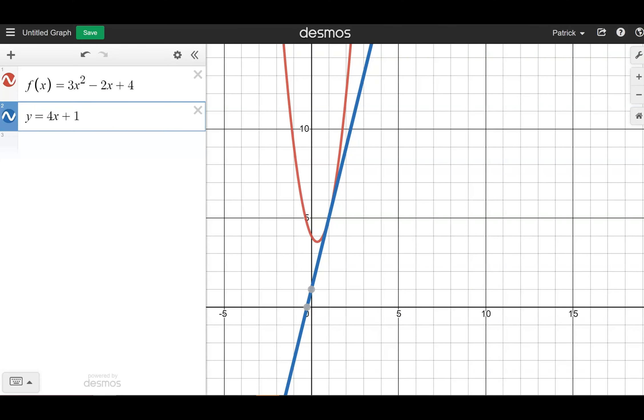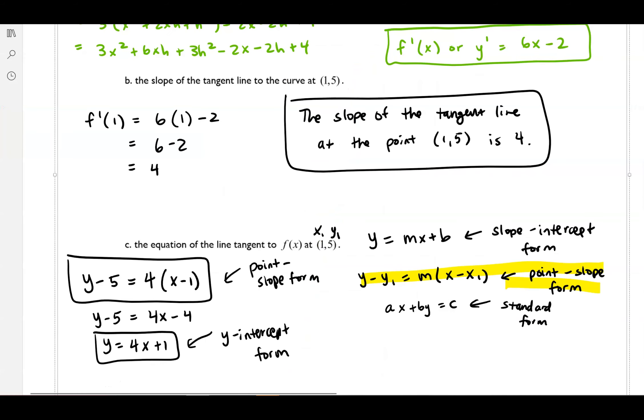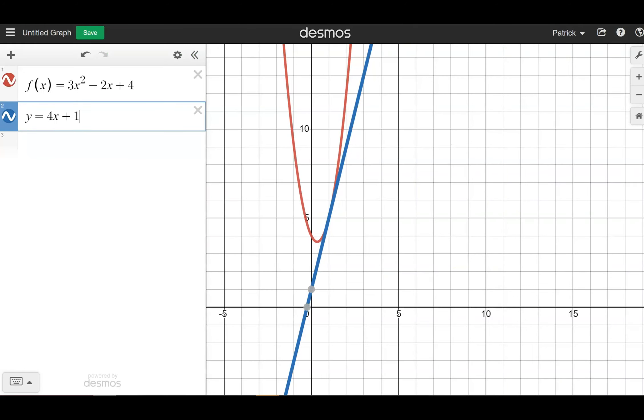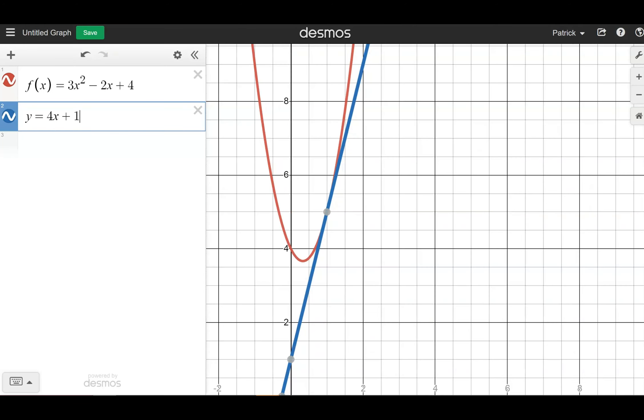So I just really quickly wanted to illustrate. So I've gone ahead on Desmos and I've graphed my original function. And I've also graphed this line that we calculated here, y equals 4x plus 1. So notice if I zoom in here.